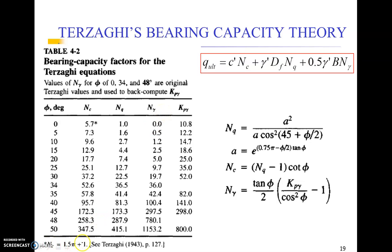Nc is 1.5 pi plus 1 cot theta Terzaghi 1943 page 127. Over here we have got various values of phi up to 50 degrees: the first column then Nc values, Nq values, and N gamma values. This Kp or Kp gamma factor is actually to compute N gamma. The most important thing is that we must remember what is the value corresponding to 0 degrees: it is 5.7 as per Terzaghi, 1 for Nq, and 0.0 for N gamma.